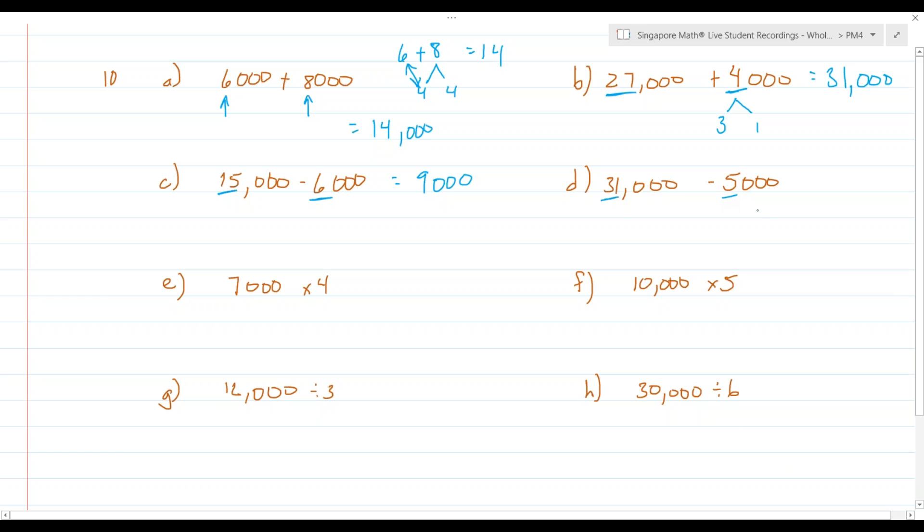31,000 minus 5,000 is going to be 26,000. Now, if you want to think about ways to think about 31 minus 5, of course, 31 is the same thing as 21 and 10. 10 minus 5 is 5, and so 21 and 5 is 26. That's just the way we've been. If you've been doing Singapore Math and Singapore Math Live, you'll know those things. If you haven't, then that might be a new way of thinking about subtraction. Then we have multiplication,